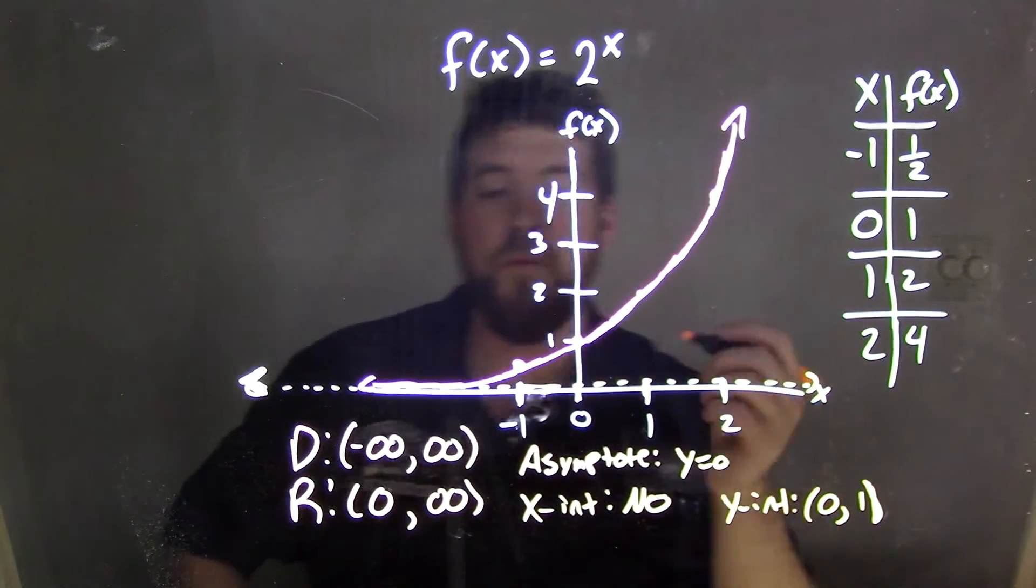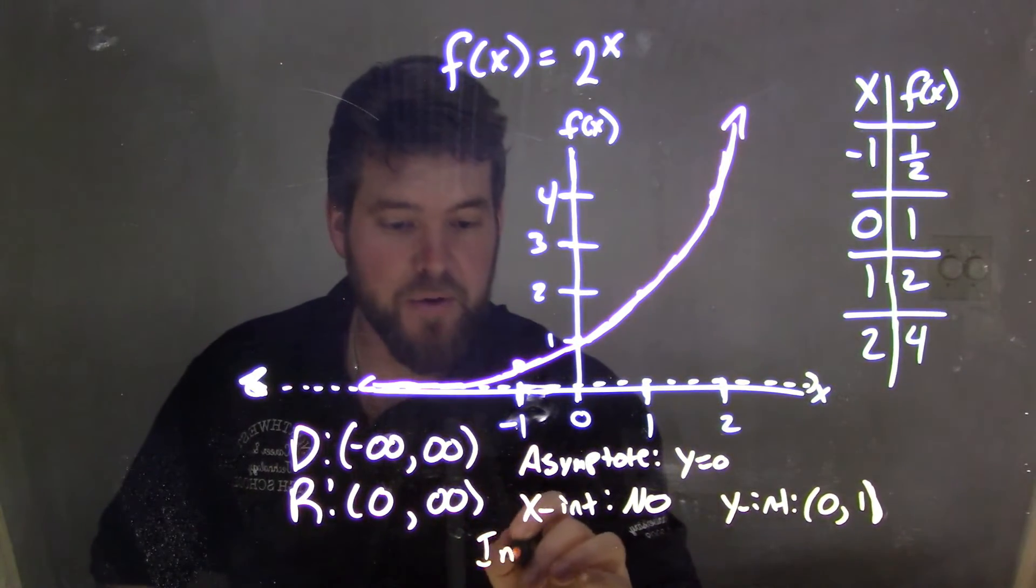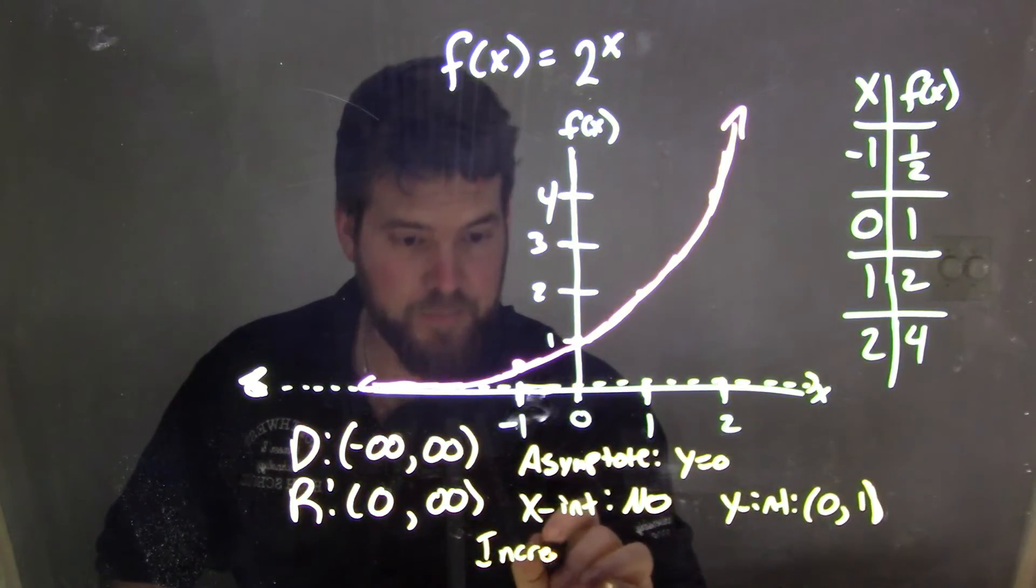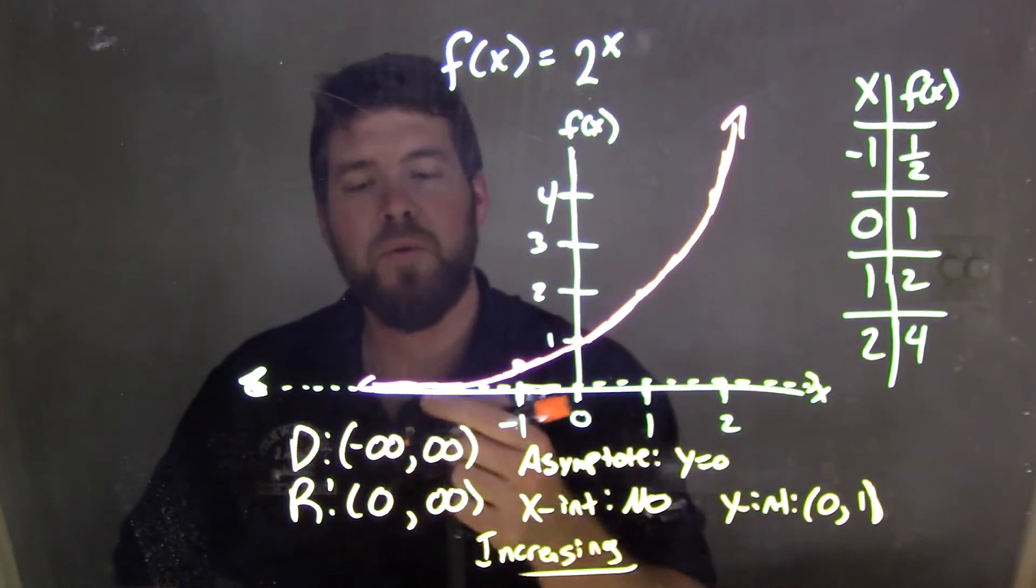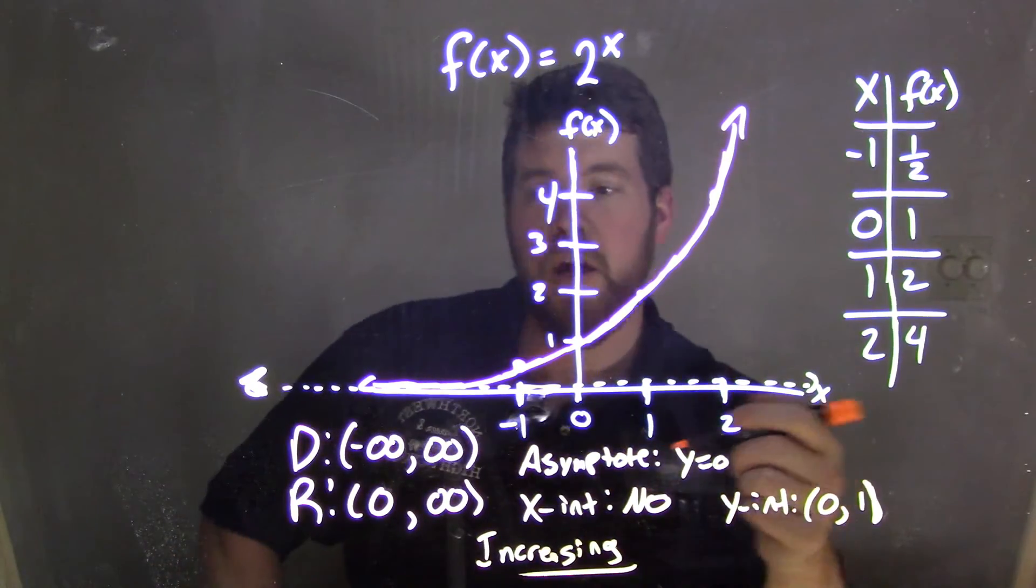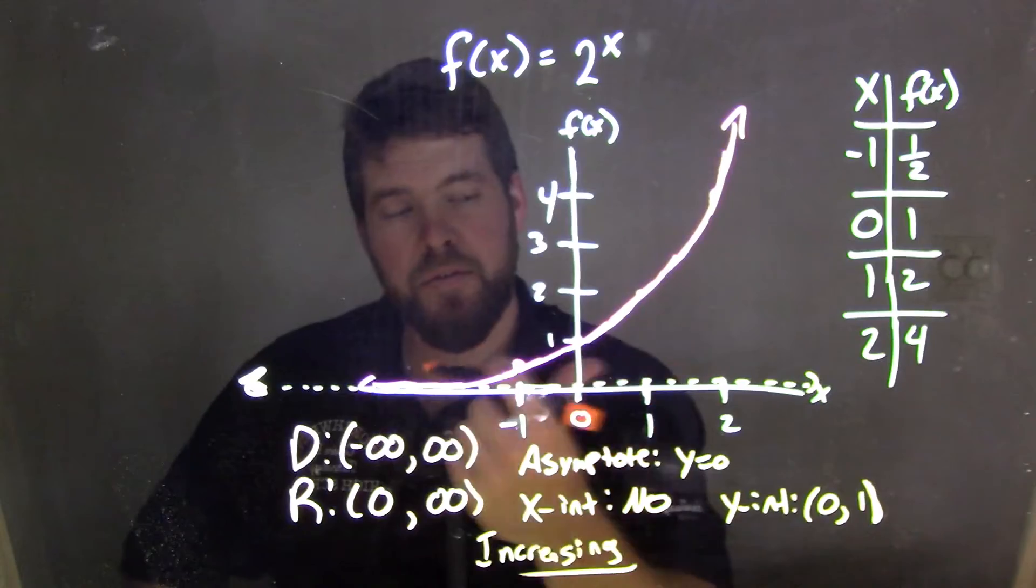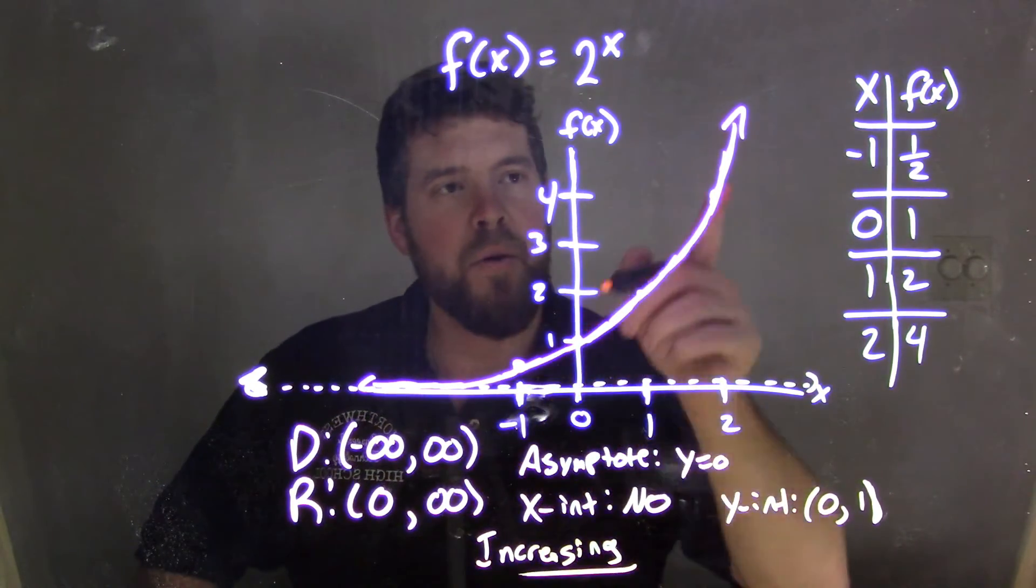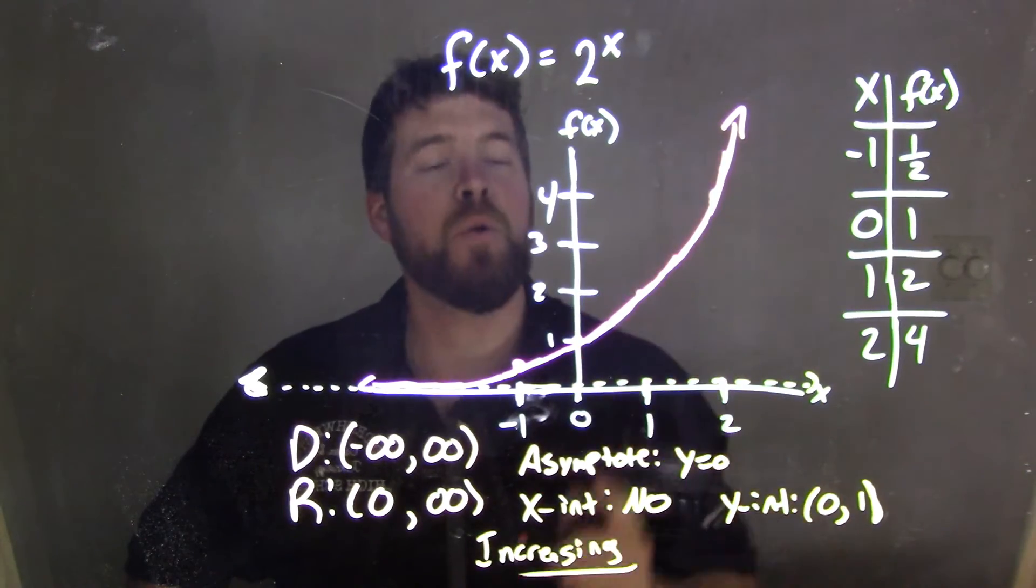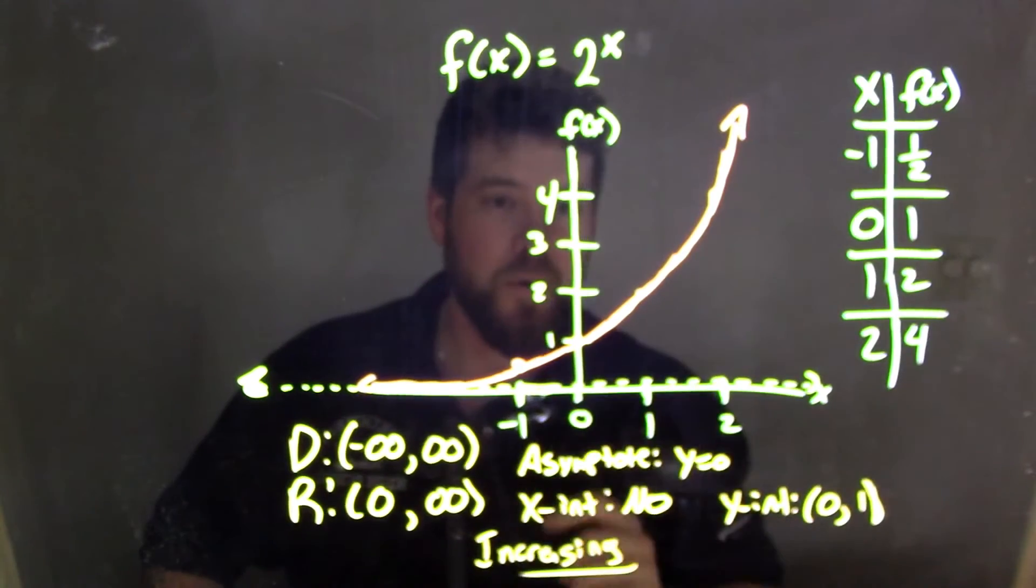Now, is the function increasing or decreasing? And this function is actually increasing. It's increasing because as we read from left to right, or from negative infinity to positive infinity, as we go towards the positive side, what is our function doing? It's always going up. It's always increasing. So our function f of x equals 2 to the x is always increasing.